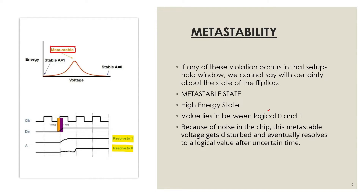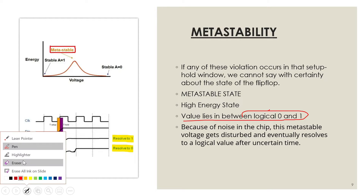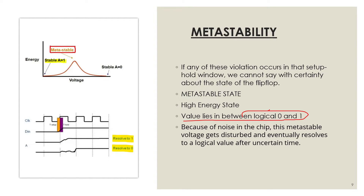As already discussed, the flip-flop has two stable states, zero and one. Since these are stable, the energy is at a minimum. But the metastable state lies somewhere in between them — it is highly unstable and the energy is at its highest. Due to the presence of noise within the chip, the metastable state gets disturbed and eventually resolves to either zero or one. But it happens after uncertain times, so there is still uncertainty.